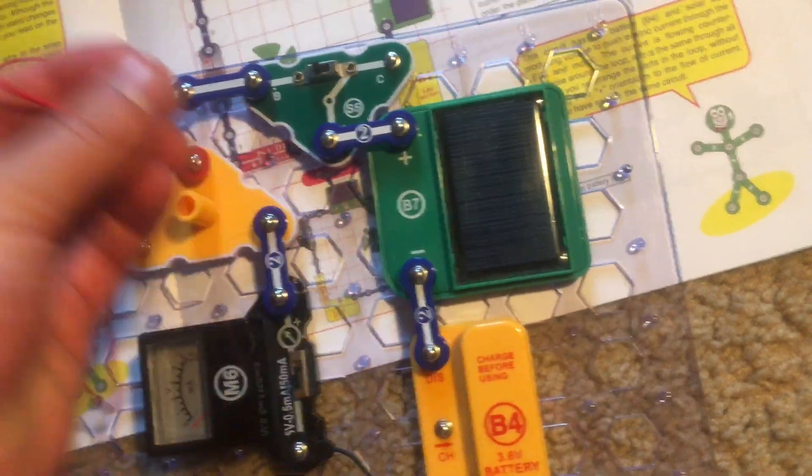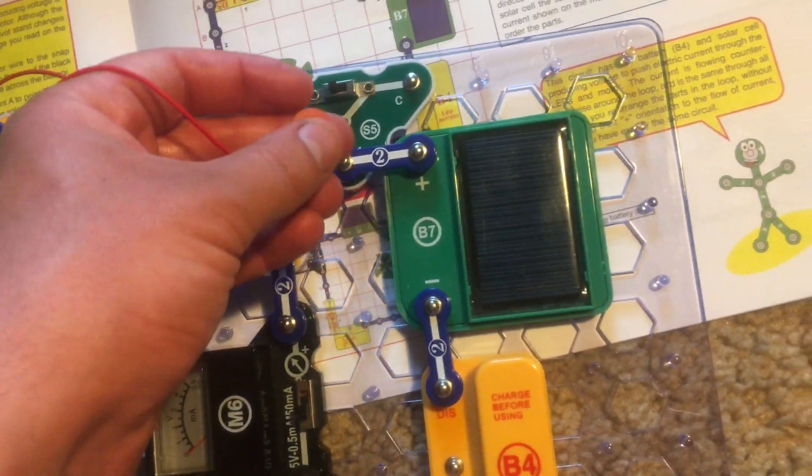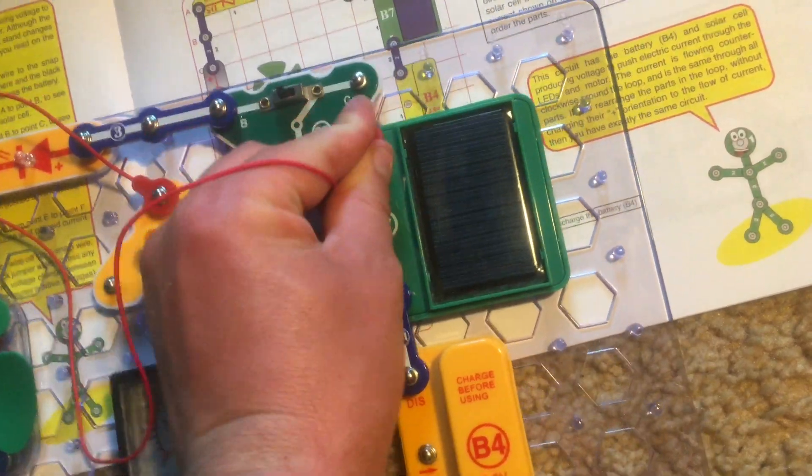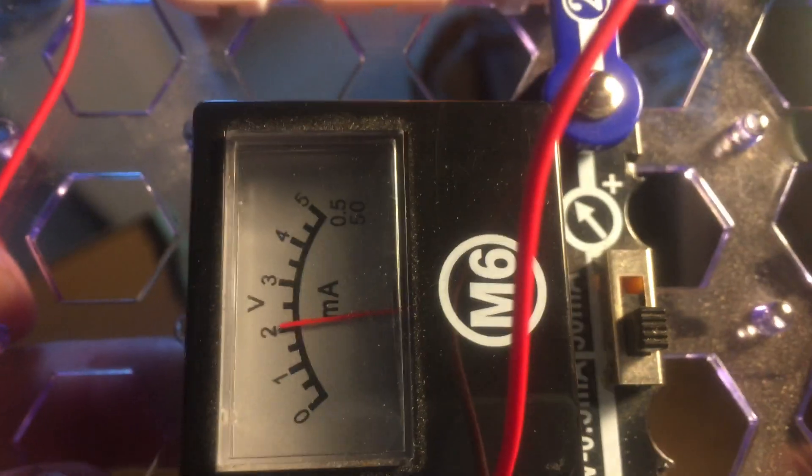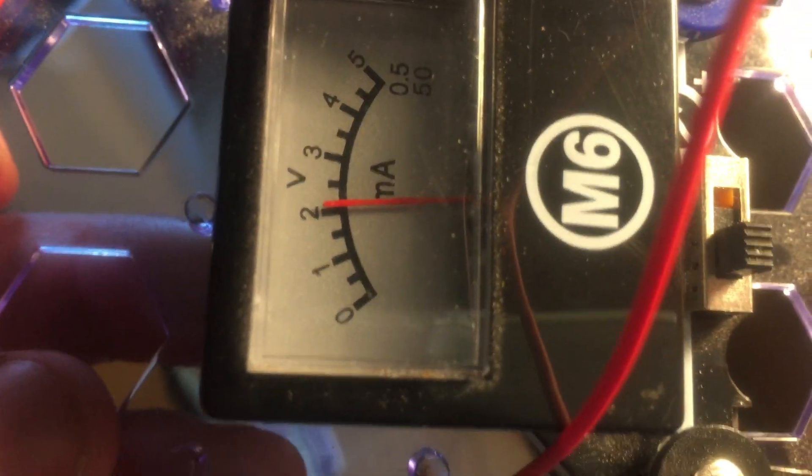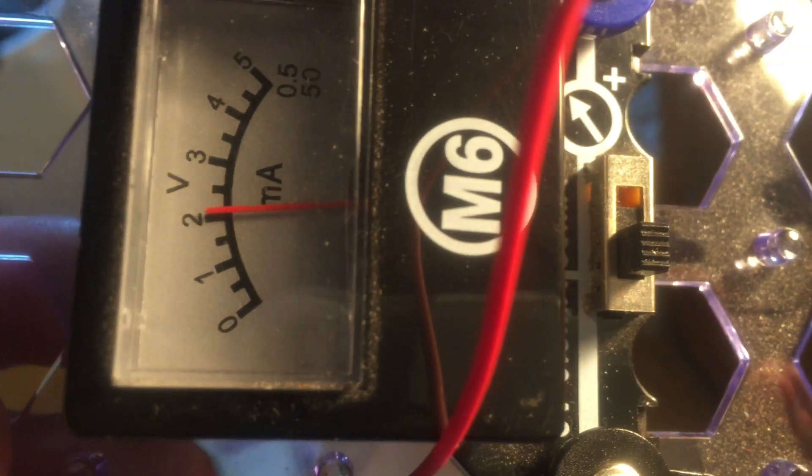Now, we will move the end of the jumper wire to point B over here so that the solar cell is included. And now, with the adequate light, it reads about the same. Just over 2 volts, although it would really be just over 4 volts.